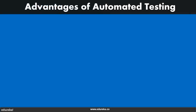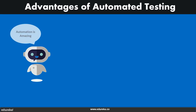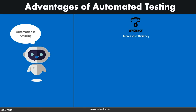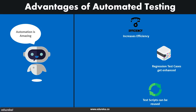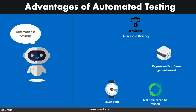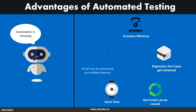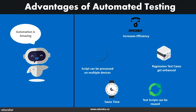Now let me list down the key advantages of automated testing. Automation of mobile testing has proven to be really helpful. Firstly, it increases testing efficiency. Secondly, it enhances regression test case execution. Third, it saves a bunch of time while also executing more test cases, and the same test cases can be performed again and again on multiple devices. Last but not the least, test scripts can be run parallelly on multiple devices. So these are a few advantages that come along with automated testing of mobile applications.